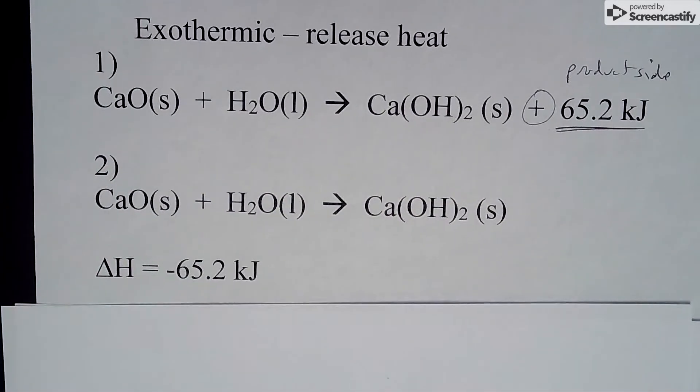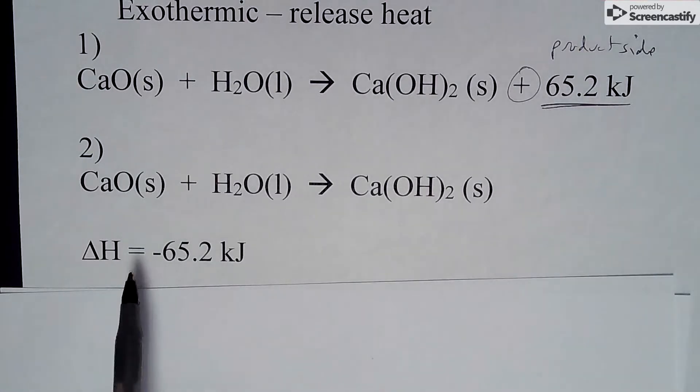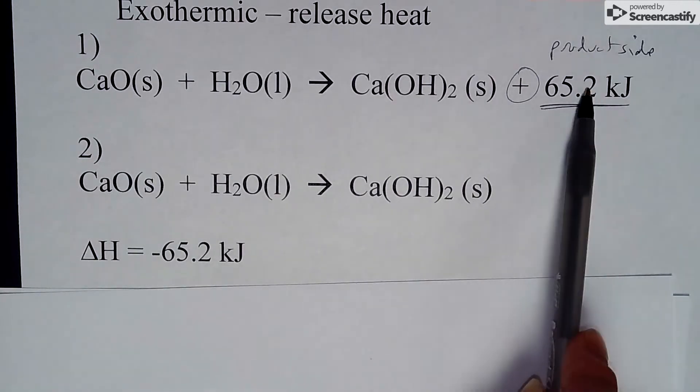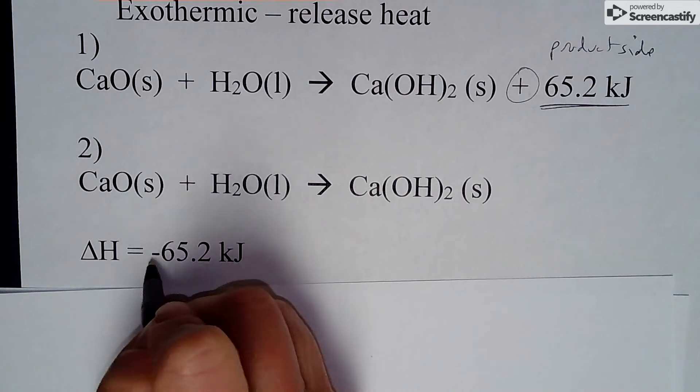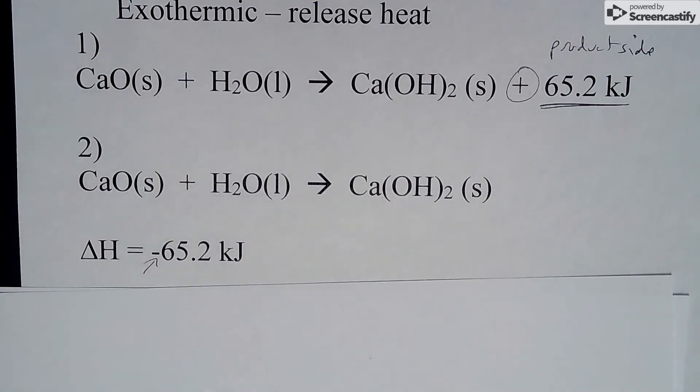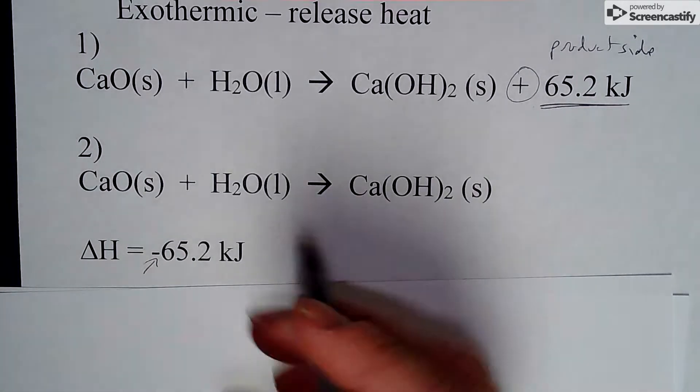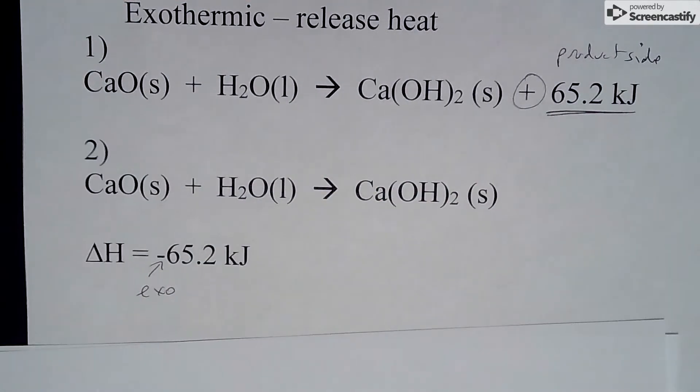The second way we could write this chemical reaction is instead of putting the heat in the equation, we could write a delta H over on the side. Same exact chemical reaction, same number. There's no difference here in the number. But what you see here is this is now a negative sign. Since it is a negative sign, that is what's telling us that this is an exothermic reaction. We're always going to look at negatives as being exothermic, positives as being endothermic.